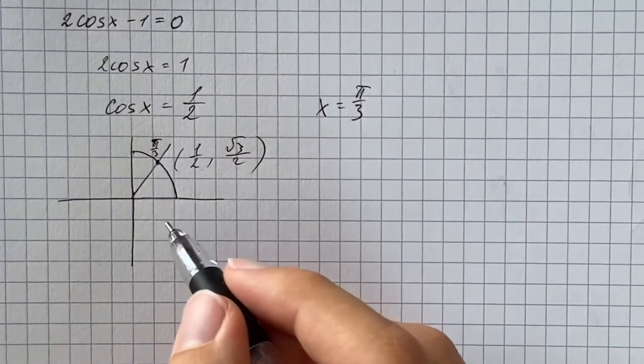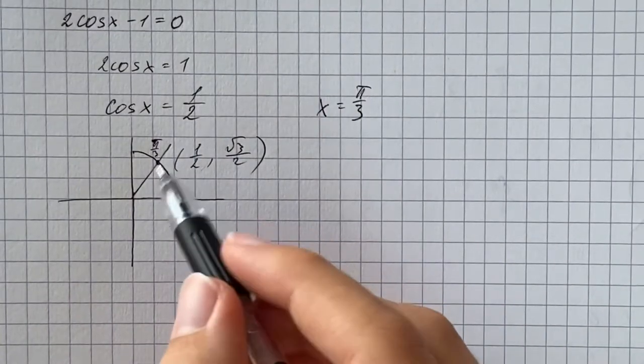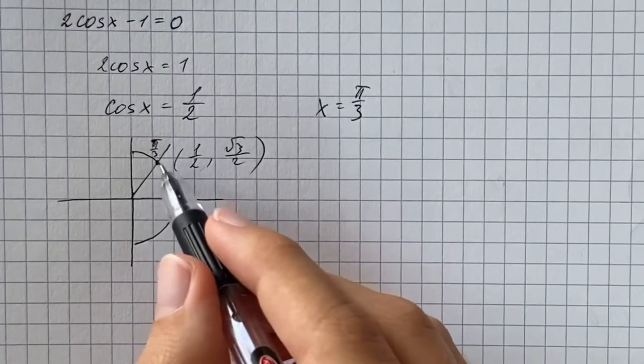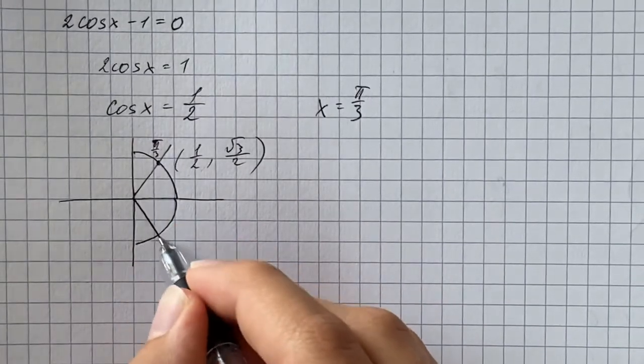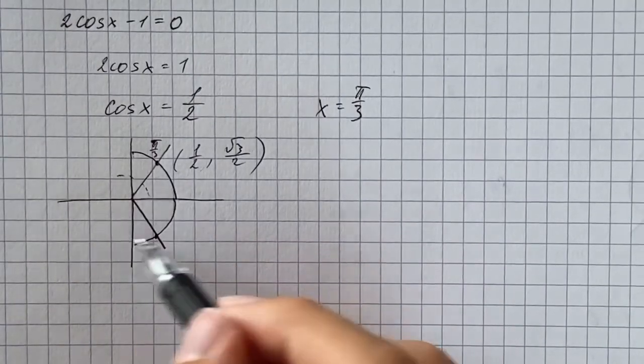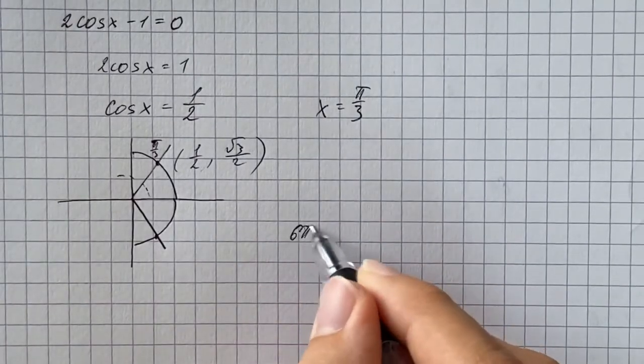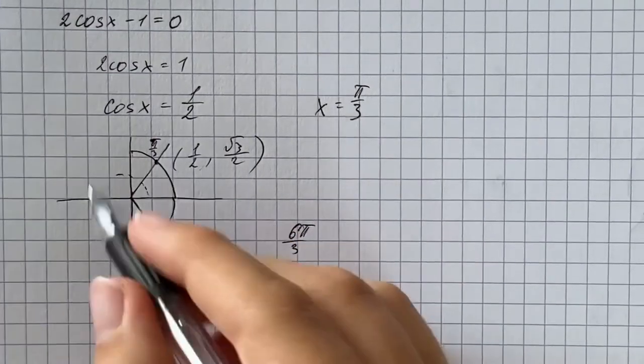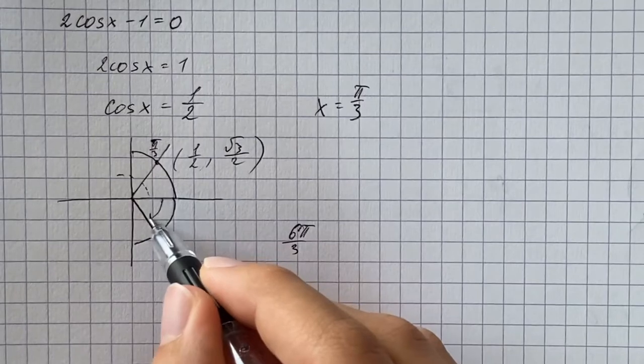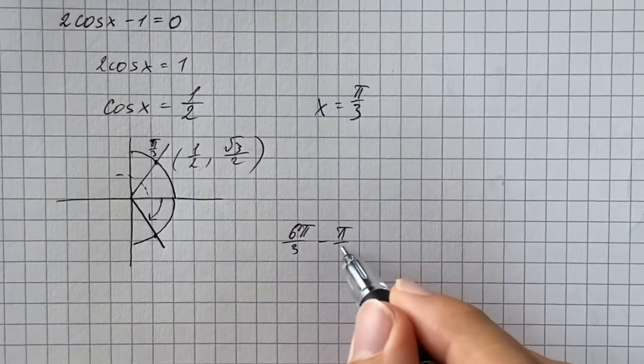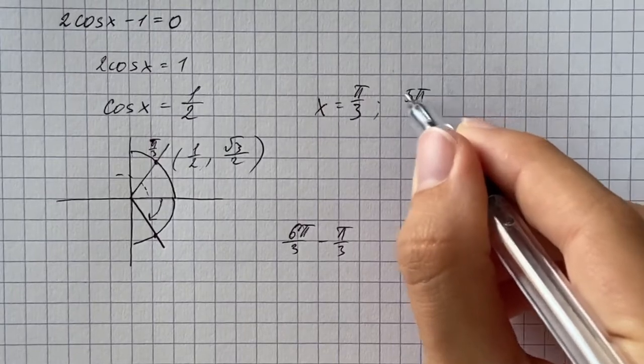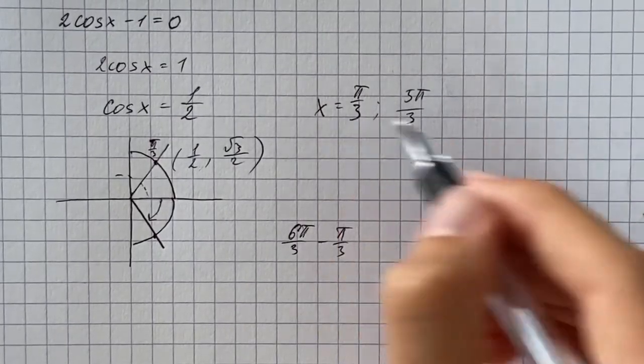There is going to be another solution down here in the fourth quadrant, because the x coordinate would be positive. If we go all the way around, we got 6π over 3, or just 2π, and if we backtrack π over 3 here, we get our angle, which is going to be 5π over 3. So that's our second solution.